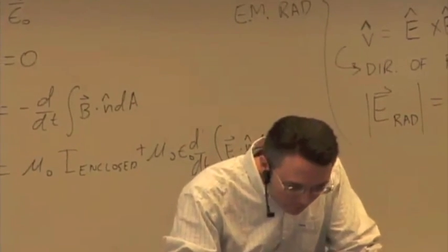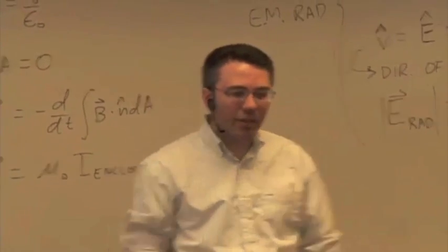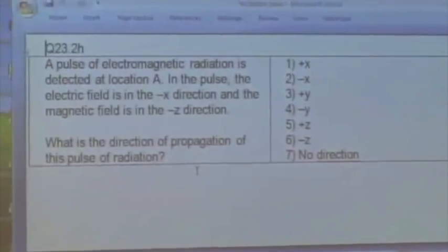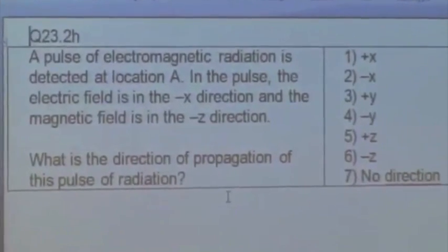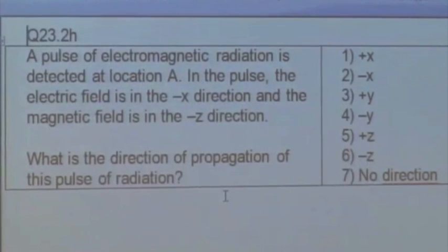Let's try a question. Let's say you have a pulse of electromagnetic radiation detected at a particular location A, and when you measure it, you find the electric field is in the negative x direction, and the magnetic field is in the negative z direction. What's the direction of propagation? In which direction is the wave traveling, or the pulse traveling?